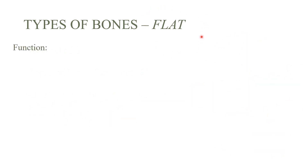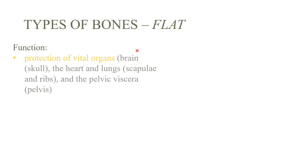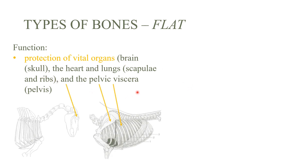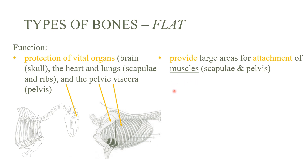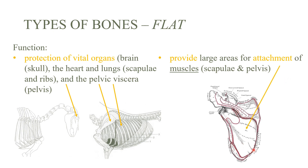Flat bones have important functions. The first is protection of the main or vital organs — the best example is the skull for brain protection. We also have the scapula, which helps protect the lungs and the heart, and also the ribs. The second function is to provide large areas for muscle attachment. The scapula is again the best example, as many large muscles attach to it — the red lines here show where muscles attach.